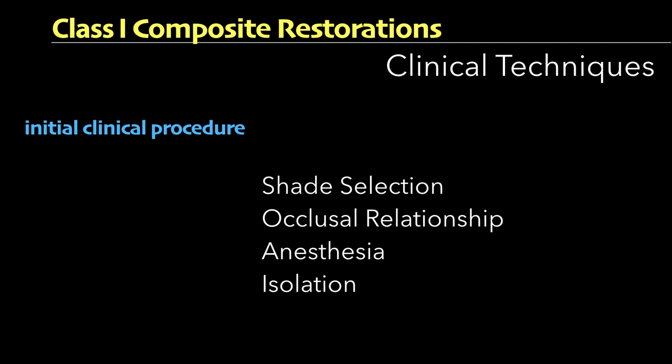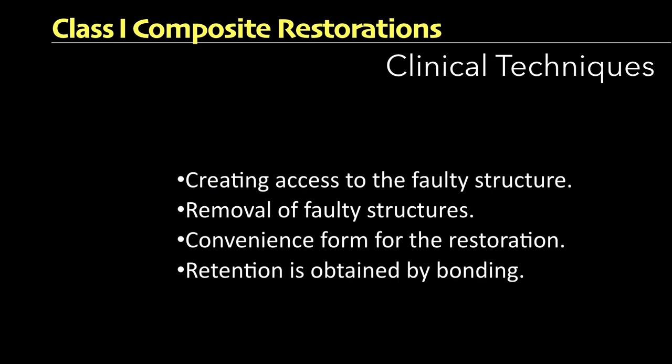Knowing the pre-operative occlusal relationship is paramount for optimum restoration. Local anesthesia is provided because it makes for a more pleasant, uninterrupted procedure and there is a marked reduction in salivation. Isolation is extremely important for a successful composite restoration; although cotton rolls can be used, it is highly unpredictable. Tooth preparation involves removing only the faulty tooth structure — not extension for prevention as G.V. Black described — and creating a convenience form. Retention of composite is always obtained with the help of bonding.